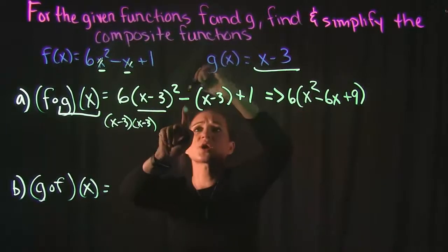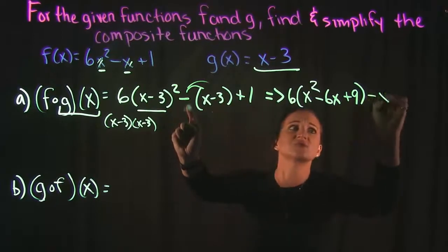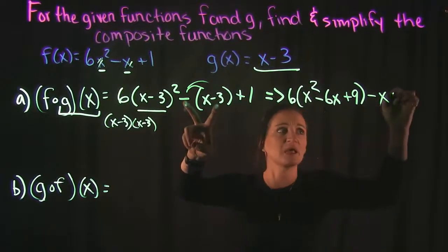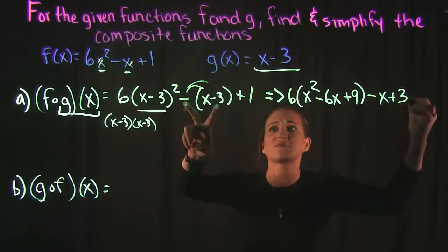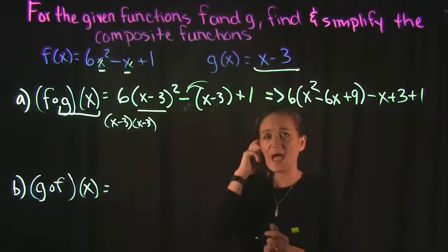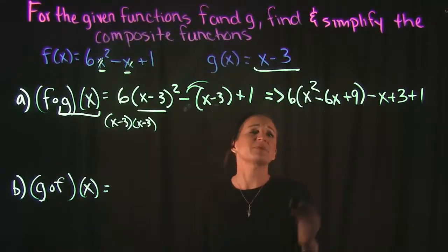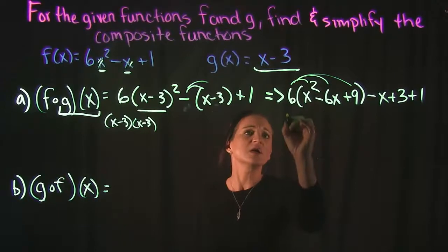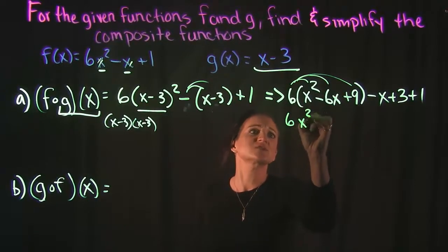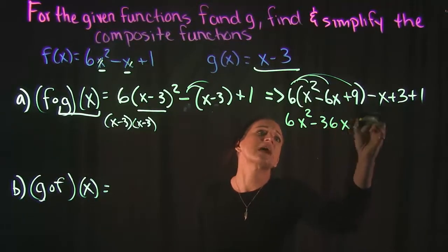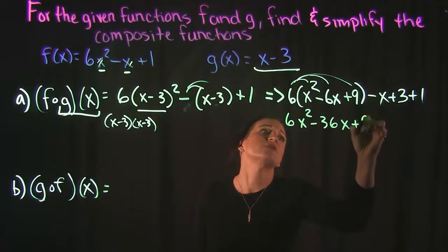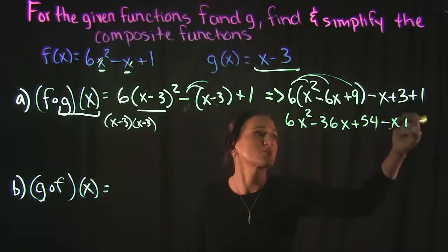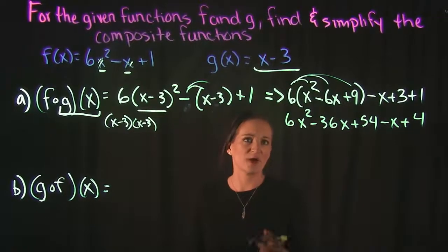And then I'm going to go ahead and distribute this minus here. This minus goes to the x and that minus also goes to the negative 3 making that a double negative making that a positive 3 now. The next step to simplify here is we need to distribute that 6 to everything here so that gives us 6x squared minus 36x plus 54. And then minus x plus 3 plus 1 which is really just a plus 4 there.